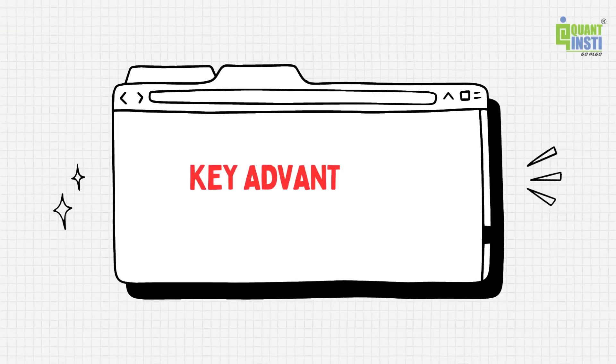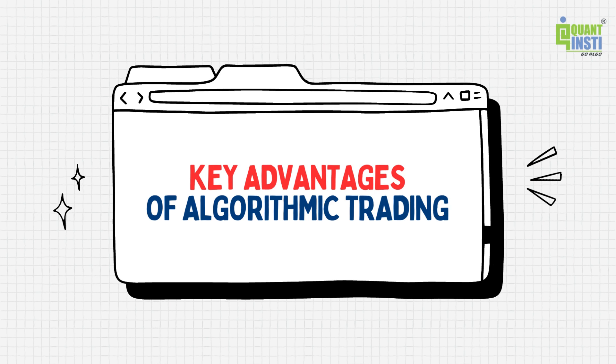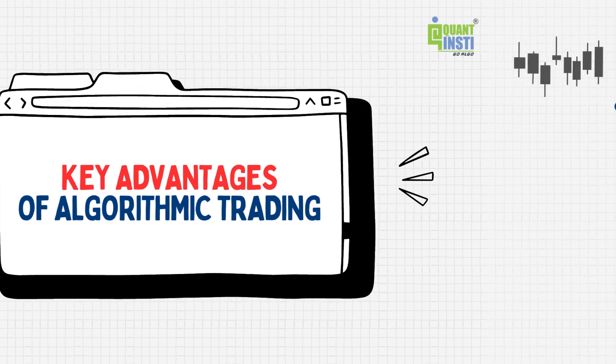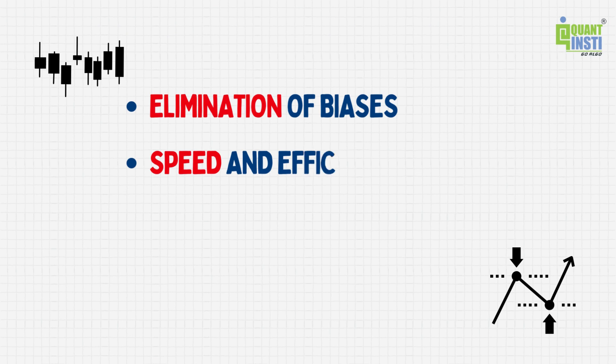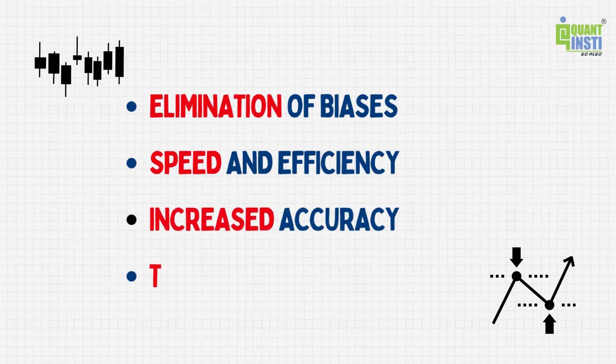Algorithmic trading efficiently executes tasks within a shorter period. The following are some of the key advantages of algorithmic trading: elimination of biases, speed and efficiency, increased accuracy.